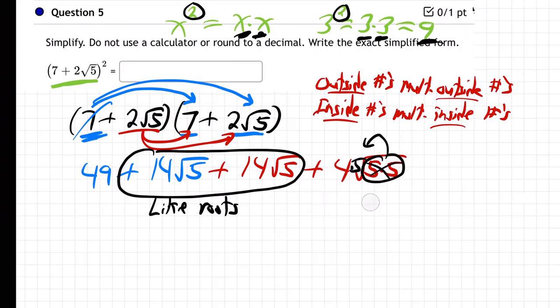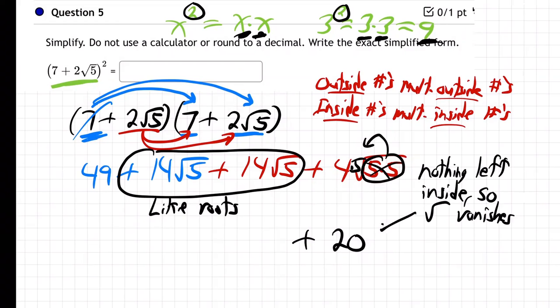And the root's gone. The root is completely gone there. So you see what happened over here? The 2 fives on the inside are going to send 1 five to the outside. And 4 times 5 on the outside is 20. And there's no more root. Nothing left. The root vanishes. It's just 20.